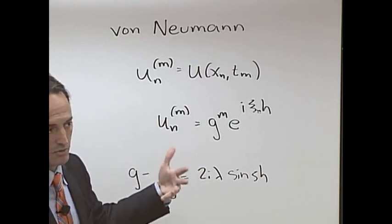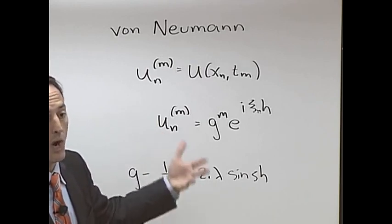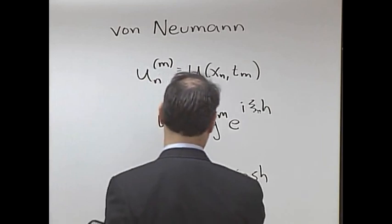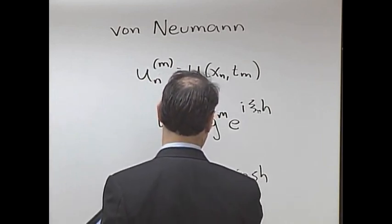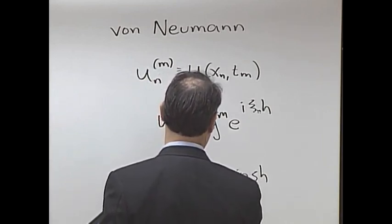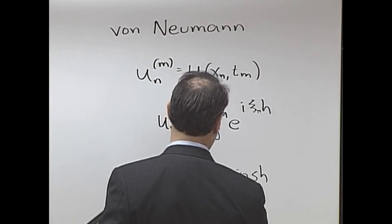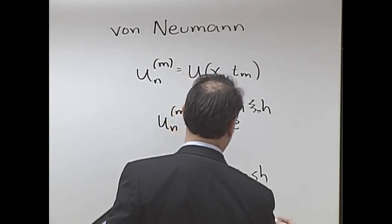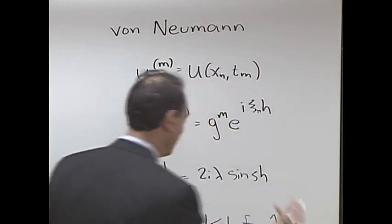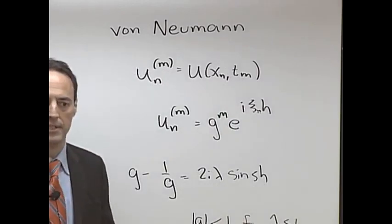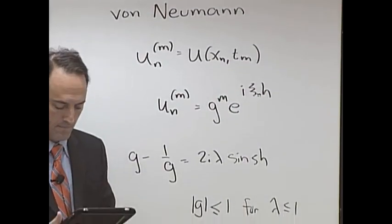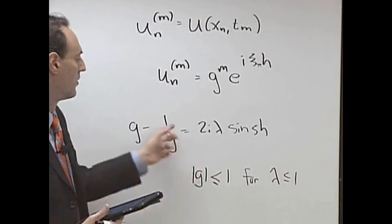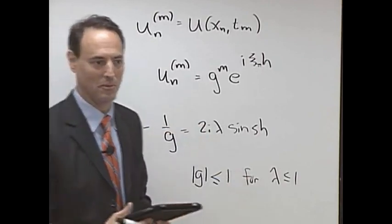Something like this for the relation of g. You can basically multiply by g, find the roots, look at this thing, and you ask: when is g bigger than one or the absolute value bigger than one? And so you find that absolute value of g is less than or equal to one for lambda less than or equal to one—that's your stability criteria.